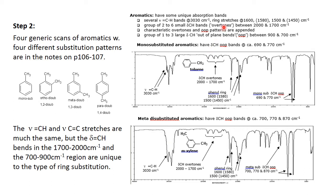The ring C=C stretches appear at four locations: 1600, 1580, 1500, and 1450 wave numbers. The values in parentheses — 1580 and 1450 — are generally smaller or sometimes missing, whereas 1600 and 1500 are more predominant. For the mono-substituted aromatic toluene, there's a significant band at 1600, 1580 is mostly missing, 1500 is present, and 1450 is there as well.